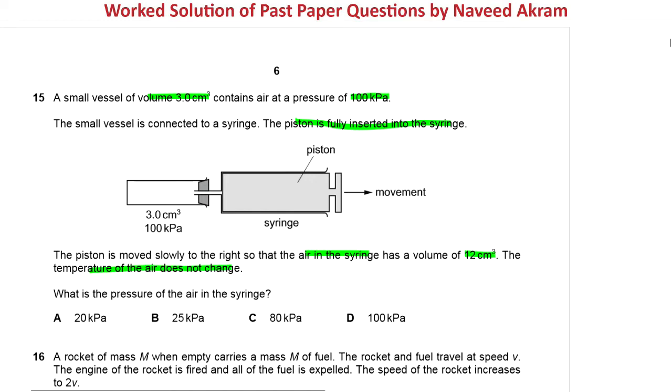P1 V1 equals P2 V2. But we need to be careful because in this situation there are two vessels: one is a vessel and the second one is a syringe.